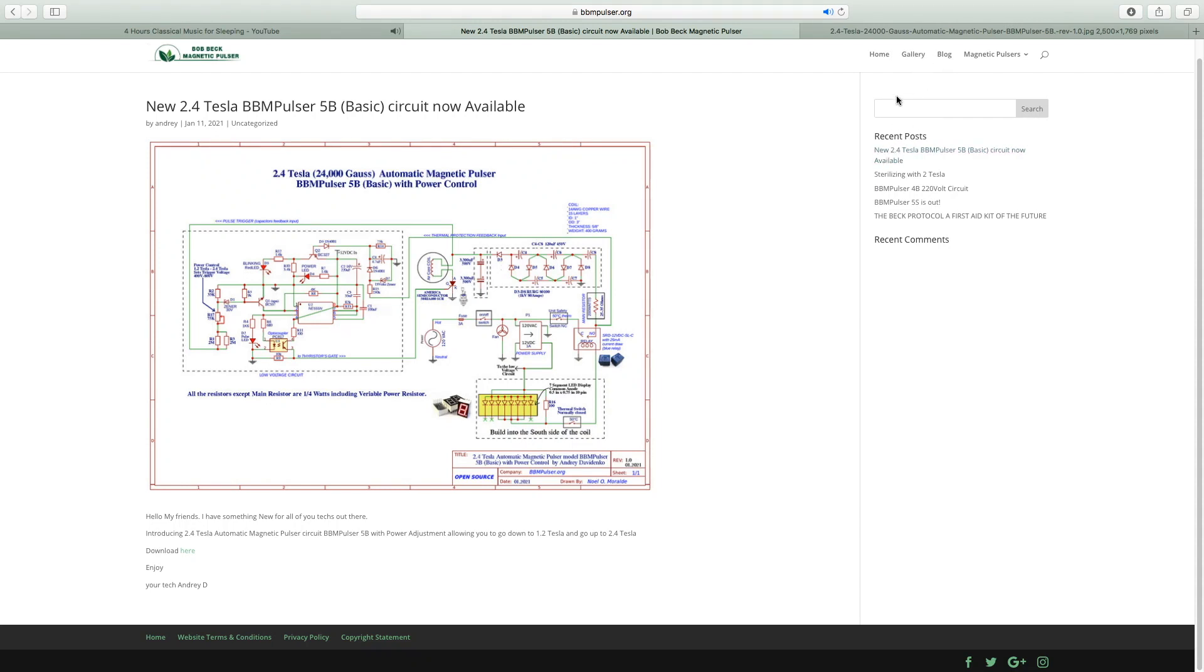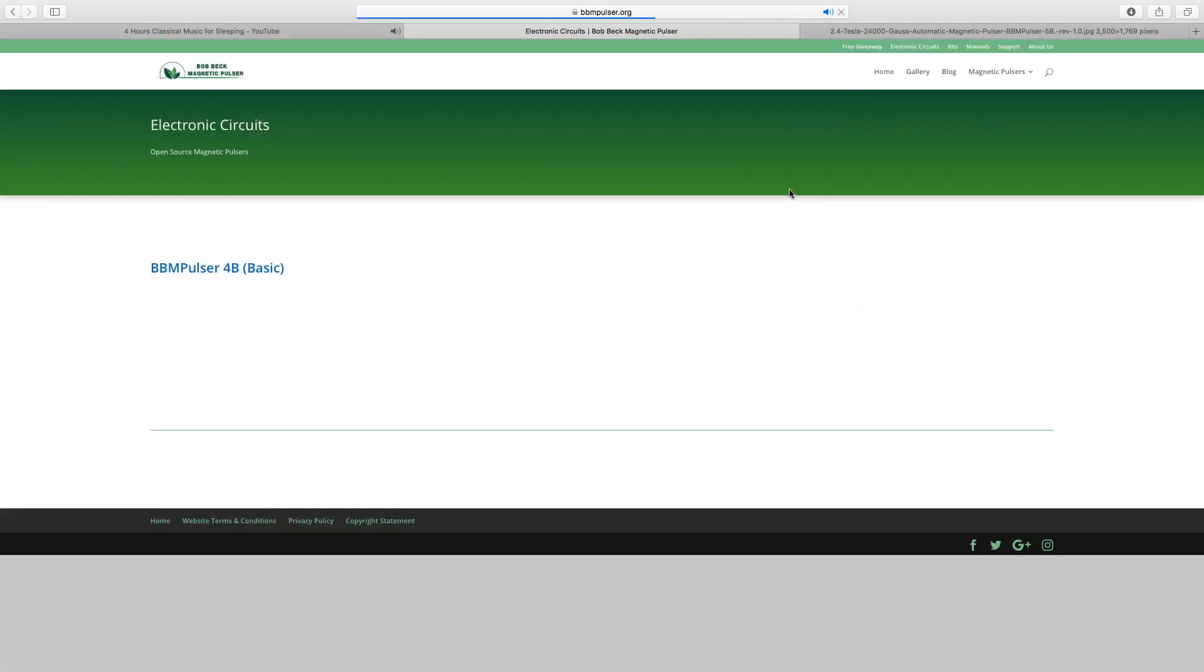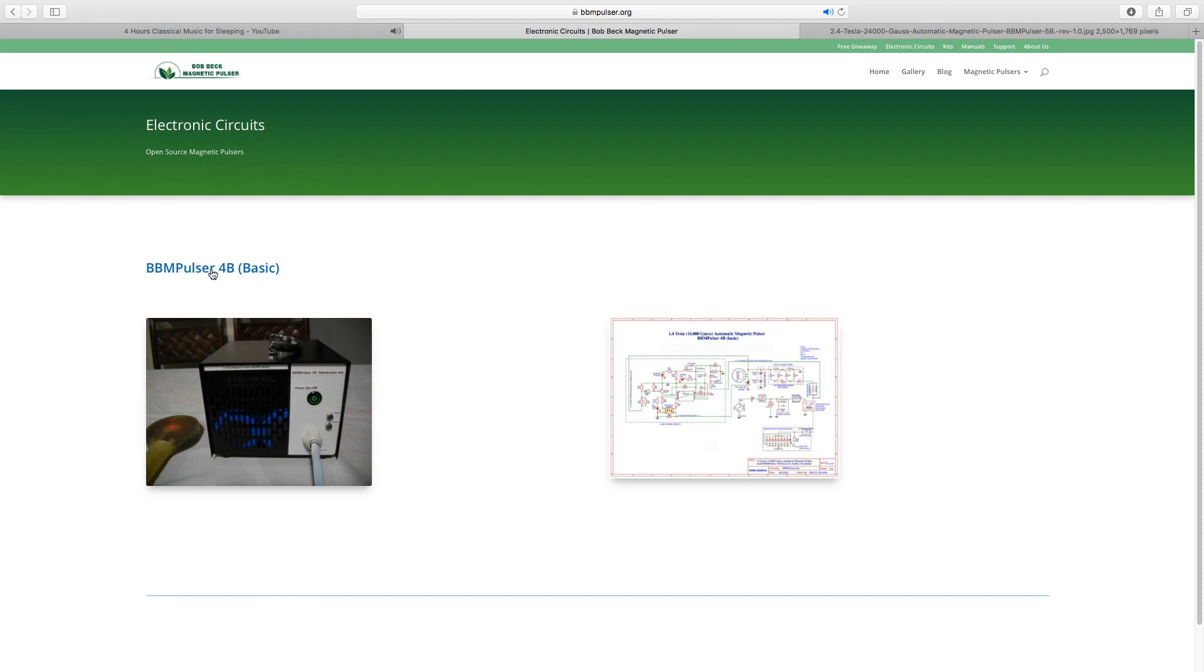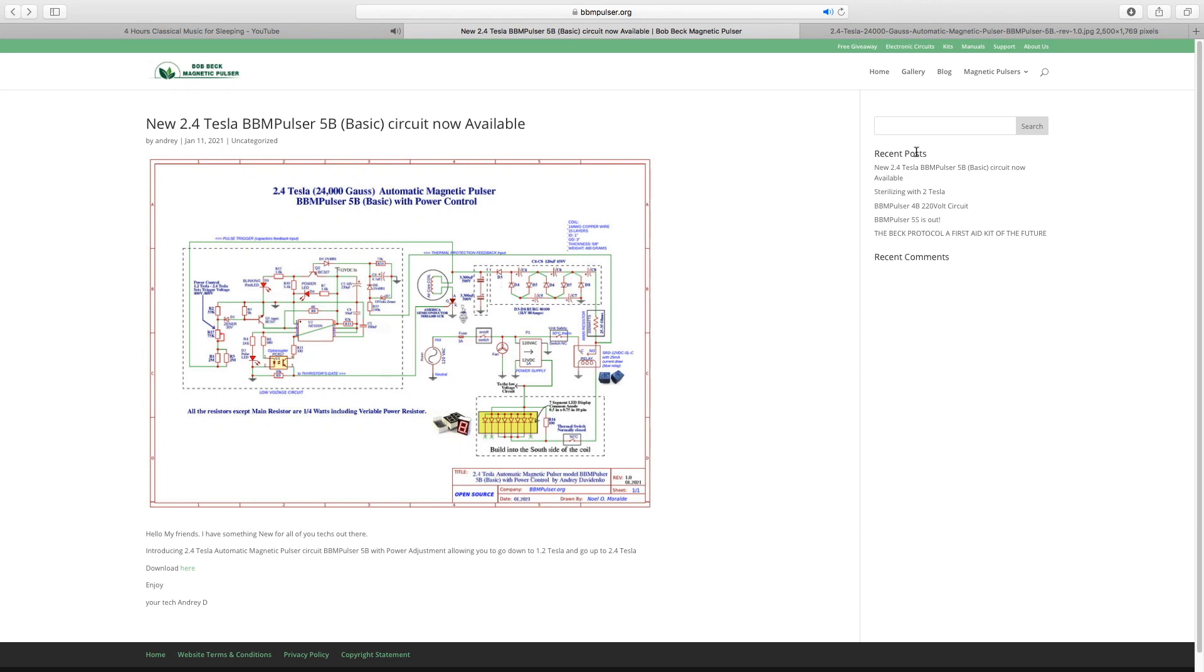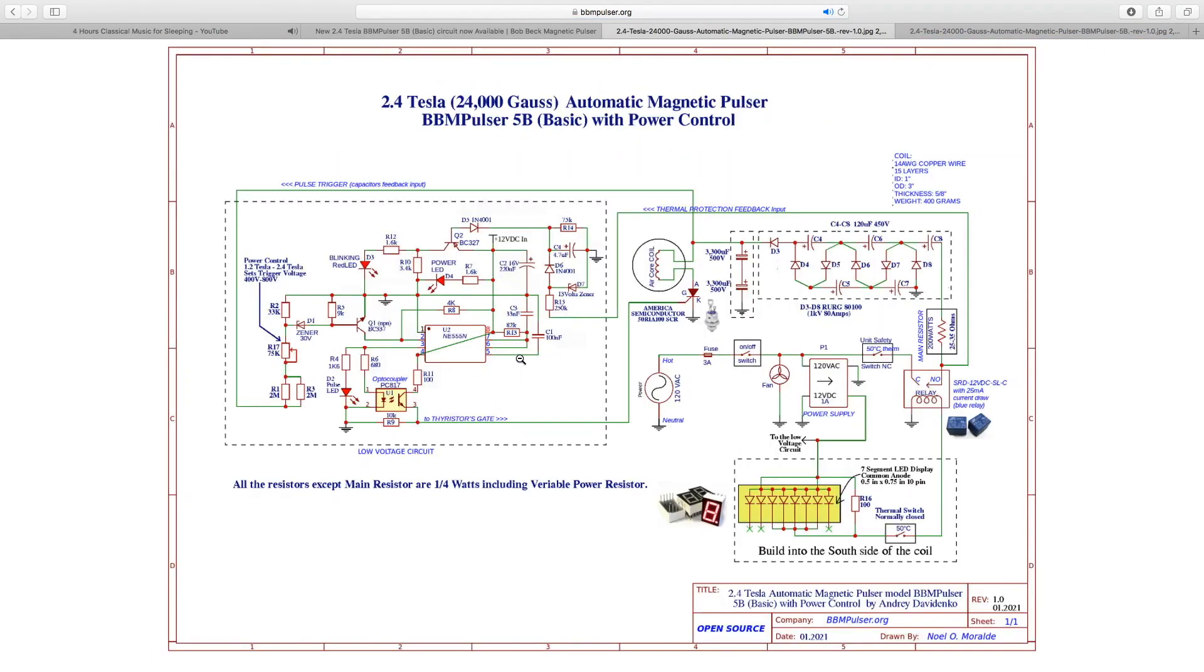You will find it here on the recent posts and also under electronic circuits. I'll have another post here under bbimpulsor 4b and there's going to be another one, bbimpulsor 5b. You can find it here as well, but for now go to my recent posts, the top one 2.4 Tesla bb impulsor, then scroll down here and go to download.